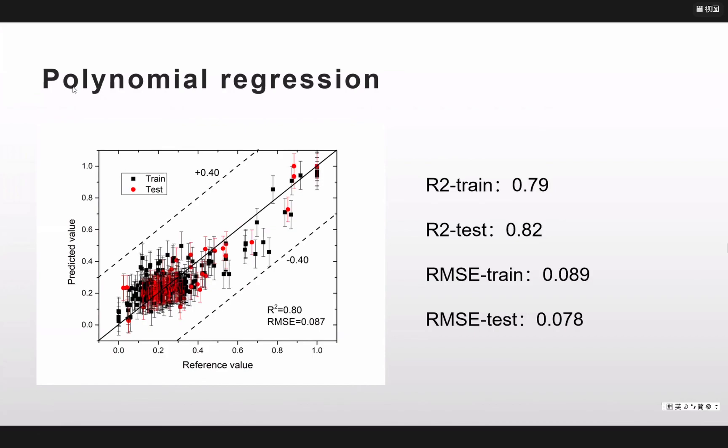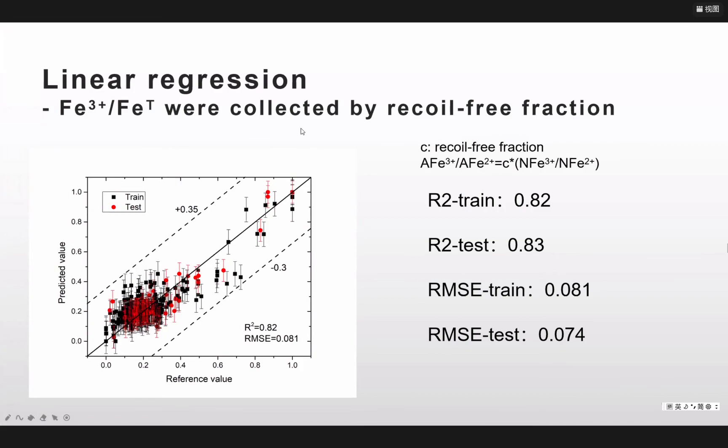Because my label, that is the contents of the ferric ions, it is measured by the Mossbauer spectra. But the Mossbauer spectra cannot test the contents of the ferric ions correctly. It means there are some errors in my label. The biggest contribution of the error is the recoil-free fraction. If we do not consider the recoil-free fraction, there would be a bigger error in my label. That would forbid me to get better models.